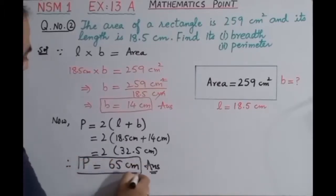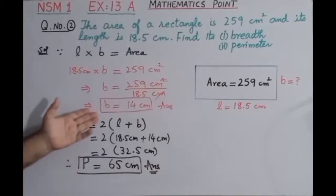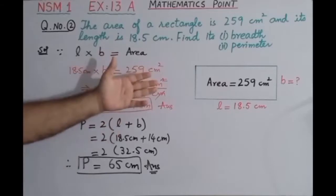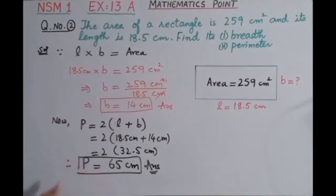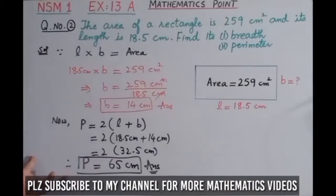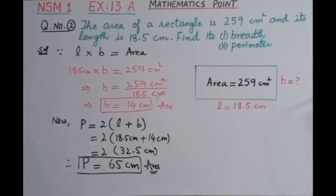So dear students, in this way we have found the two values: the breadth of the given rectangle, and the perimeter of the given rectangle. I hope you have easily understood this question. Take care, Allah Hafiz.